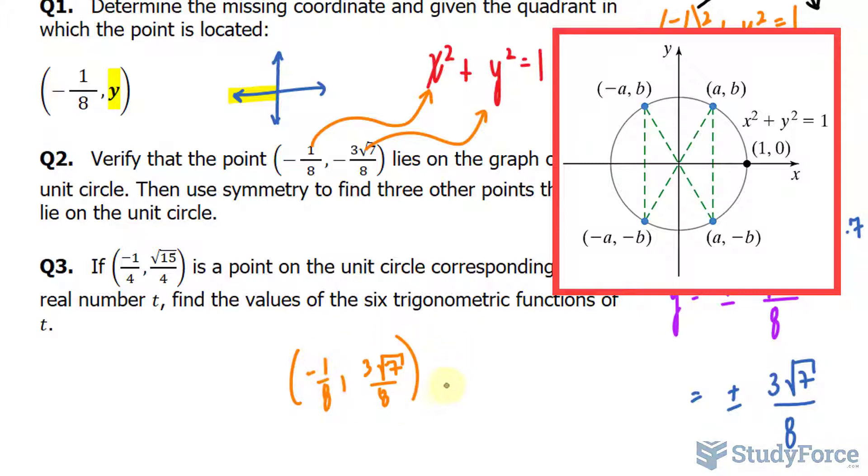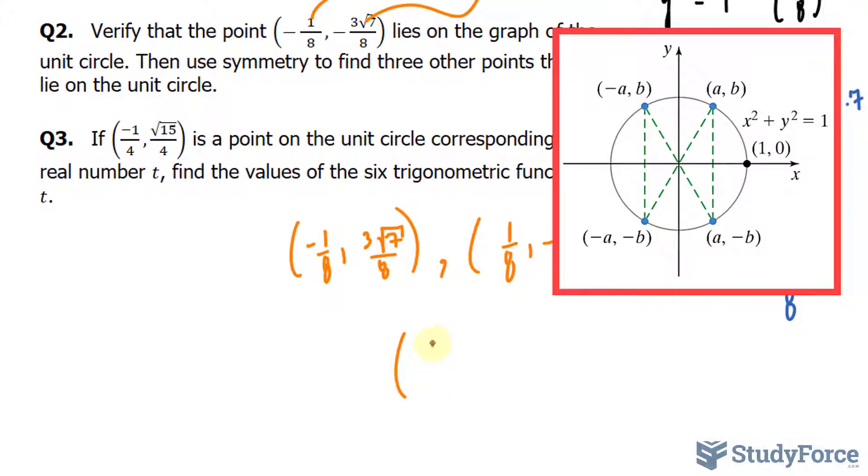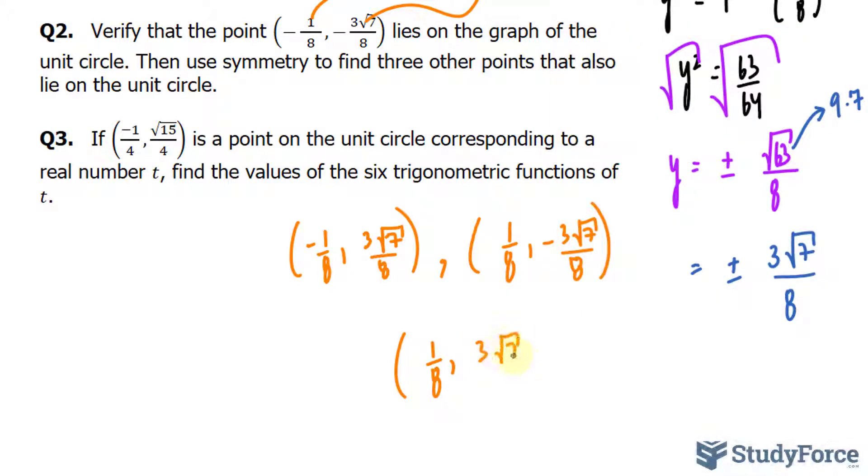In addition, we can make that positive where I have 1 over 8 and keep the y-coordinate as negative 3 times the square root of 7 over 8. So that makes our third point and our final point can be positive 1 over 8 and the positive y-coordinate, 3 times the square root of 7 over 8. So that accounts for the four points.